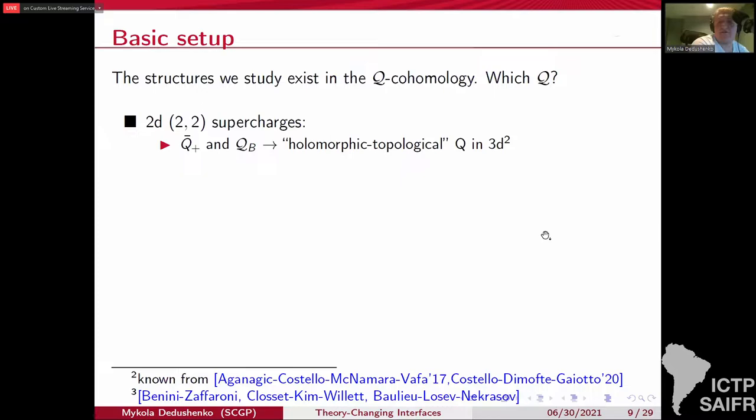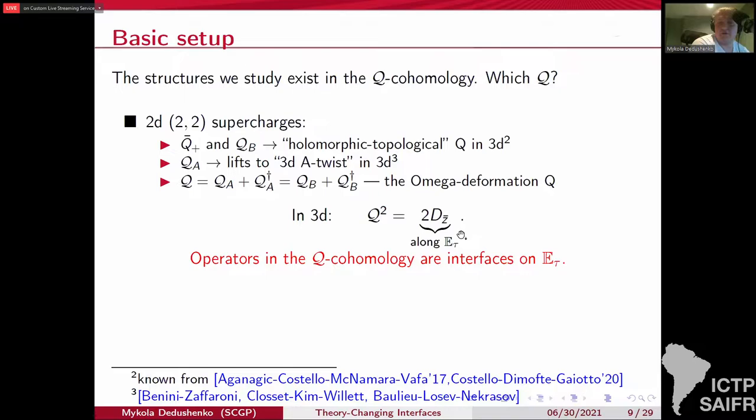In the A-model case, they lift to the 3D A-twist supercharge. But then there's the fourth one, the omega deformation Q, which is sort of in between A and B. It is preserved both by A and B branes. If you lift them to three dimensions, it is the supercharge that squares to the anti-holomorphic translation along the elliptic curve. That's at least how we choose it.